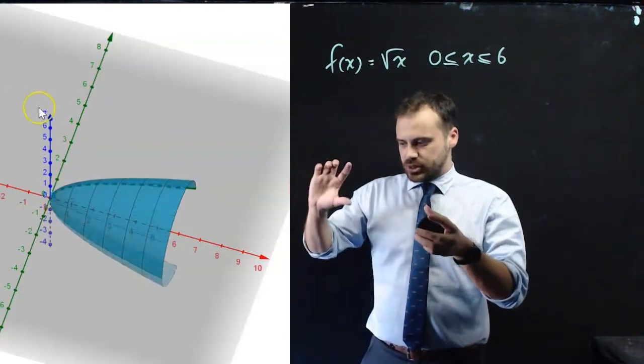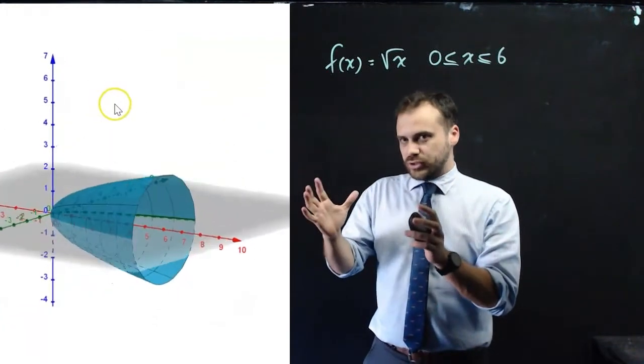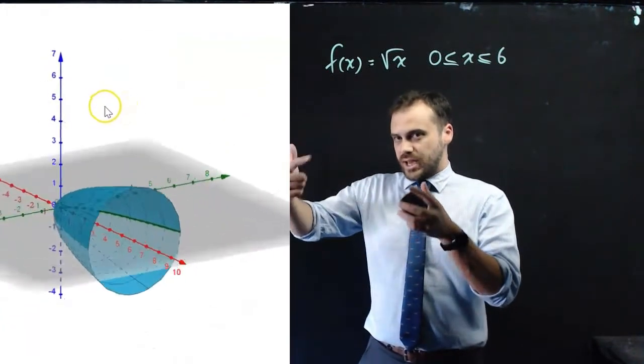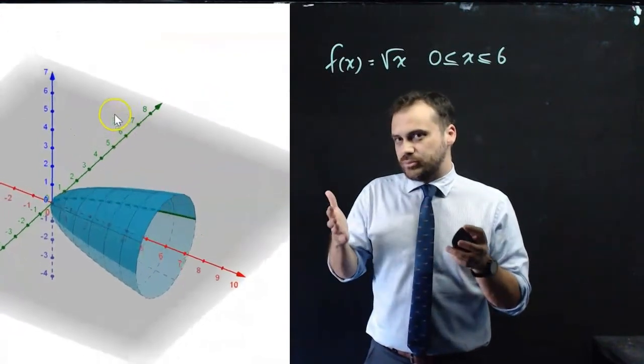Watch this. Spinning that around, what we get is called a solid of revolution. A solid built out of that. And the three-dimensional world is the one that we live in, so these are pretty interesting objects.